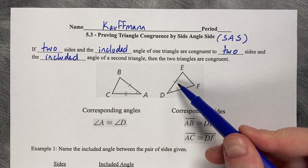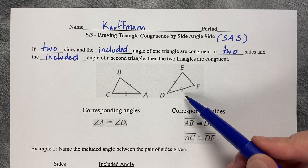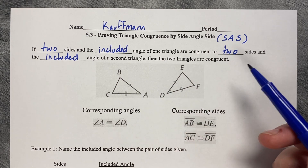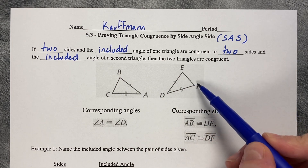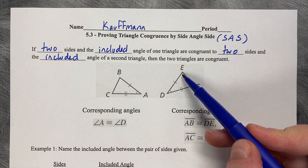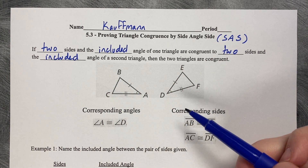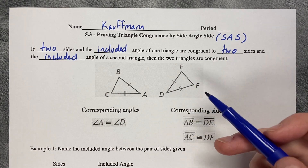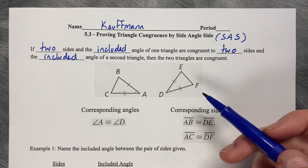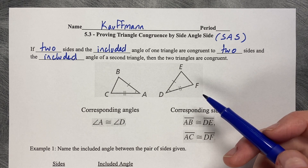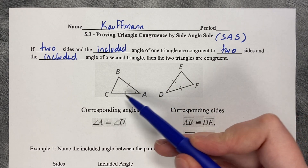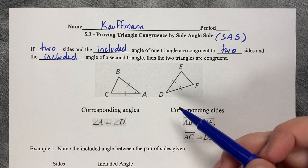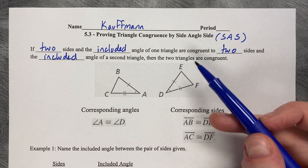AB corresponds to DE and AC corresponds to DF. Do I need to know about the other two angles or the third side? I don't know if EF is congruent to BC, and I don't know if angles E and F correspond to B and C. But this is the minimum amount of information you need to say the two triangles are congruent — two sides and the included angle between them, which we call Side-Angle-Side.